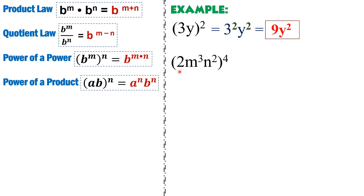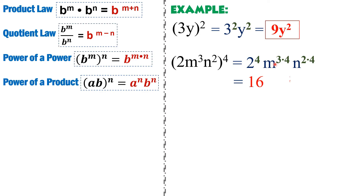Starting with 2: it gets the exponent 4. For m cubed, multiply the exponent 3 by 4 to get m raised to 12. For n squared, multiply 2 by 4 to get n raised to 8. Simplifying: 2 raised to 4 equals 2 times 2 times 2 times 2, which is positive 16. So the final answer is 16m raised to 12, n raised to 8.